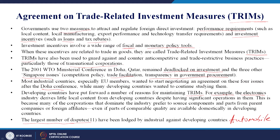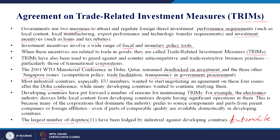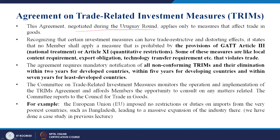Many corporations dominating the electronics industry prefer to source components and parts from their parent companies or foreign affiliates, even if those parts are of comparable quality and available domestically. Because of such reasons, developing countries wanted to stay with TRIMS and research it more, while developed countries wanted to make changes. This agreement, negotiated during the Uruguay Round, applies only to measures that affect trade in goods.